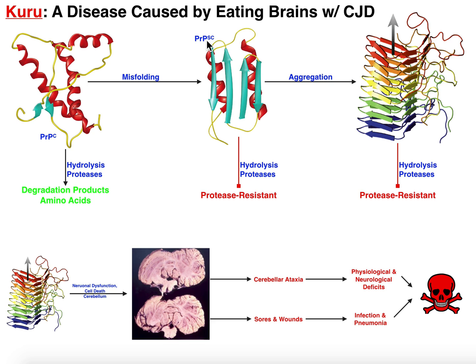The other thing to know is that this infectious protein monomer, and especially the aggregates, are more resistant to hydrolysis in the gastrointestinal tract — we would say they're protease resistant, especially the aggregates. I just wanted to remind you of that before we go into how Kuru actually works.